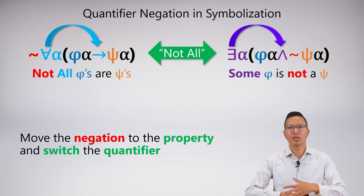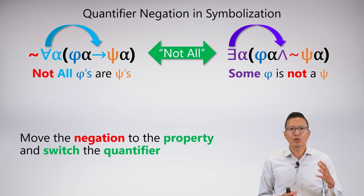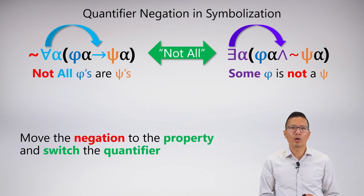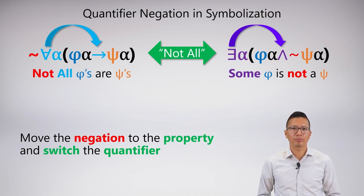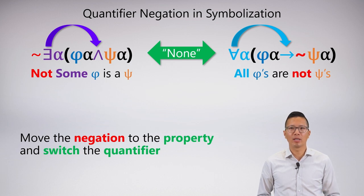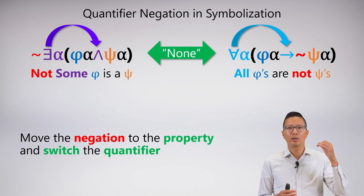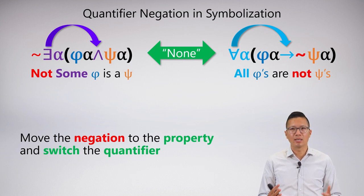Here's quantifier negation — QN — in symbolization in a practical way. Quantifier negation is the move where you go back and forth between quantifiers. In symbolization, you move the negation to the property and switch the quantifier. To say 'not all,' you could use the negation of the universal, or move that negation to the property and switch from universal to existential, getting 'some is not' — those are equivalent. Similarly for 'none': symbolize it as the negated existential, or move the negation to the property and switch to the universal, getting 'for everything, if you're the subject, then you're not the property' — nothing has that property. This is quantifier negation, or QN, in symbolization.